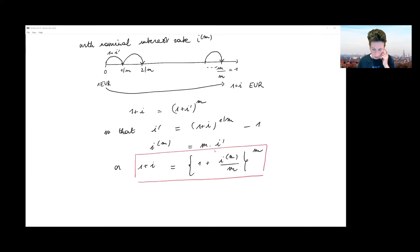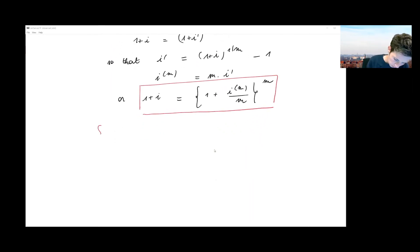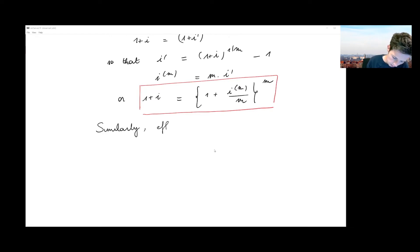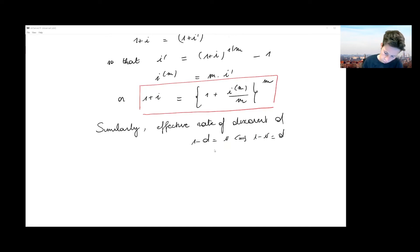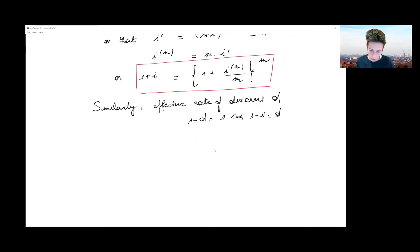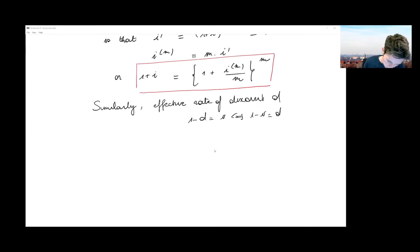Because both ways of investing should lead to the same amount of one plus i at time one, we have the connection that one plus i' to the power m equals one plus i. Therefore i' equals (1+i)^(1/m) minus one. The nominal interest rate i^(m) is then equal to m times i', or equivalently, one plus i equals (1 + i^(m)/m)^m. This is a relation we introduced earlier and must keep in mind when dealing with nominal interest rates.